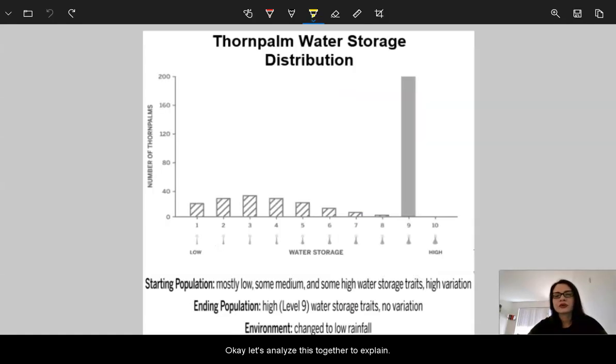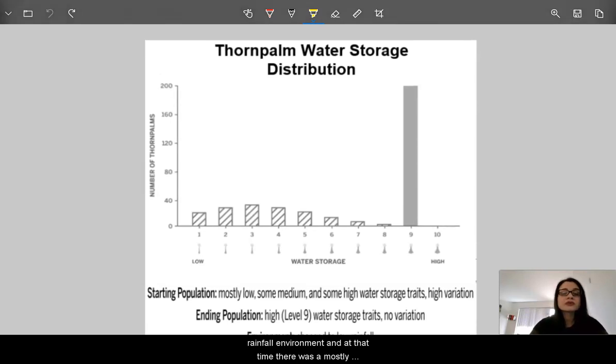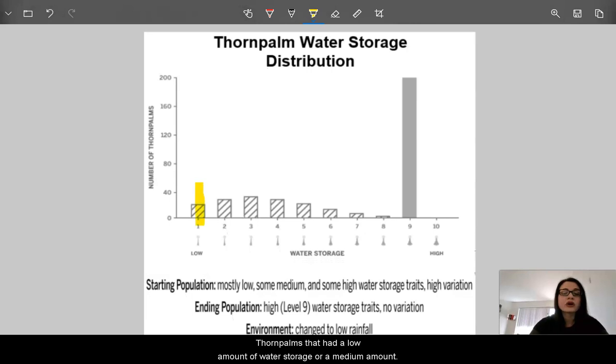Let's analyze this together to explain. Originally, these thorn palms lived in a relatively high rainfall environment. And at that time, there was mostly thorn palms that had a low amount of water storage or a medium amount. There was only a few that had a high amount of water storage.